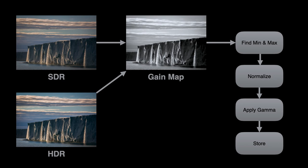But when it actually comes to storing it in an image file format, most file formats use integer pixels, so we need to do a bit of post-processing. The way we do that is with a normalization—we find the minimum and maximum gain map values and apply a transform so that minimum values map to zero and maximum values map to one.